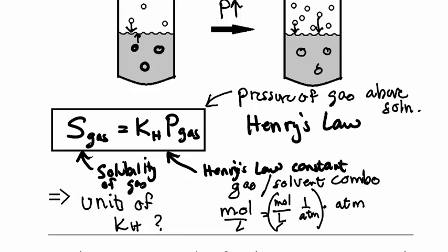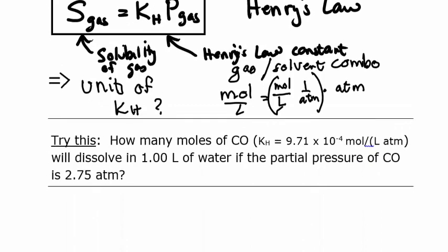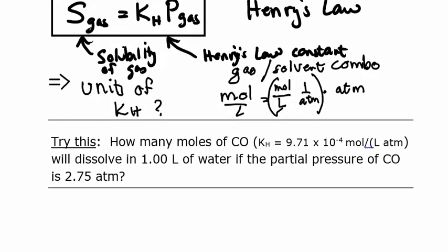Let's use this equation to solve a problem. How many moles of carbon monoxide, and the Henry's Law constant is given, will dissolve in one liter of water if the partial pressure of carbon monoxide is 2.75 atmospheres. You try to work this problem.